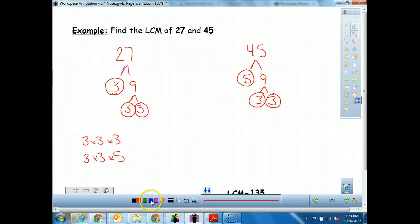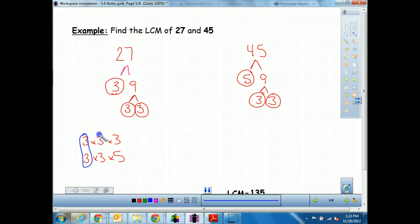So now I need to go through and circle their common ones. They both have a 3. So I got one circle. Oh, they both have another 3. And then these ones don't match. So I write out what did I circle the first time. I circled 3. My second circle is again of 3's. And then I have to go back and pick up these last little scraggly ones. We can't leave them behind. They're a little lonely sitting out there. So I'm going to add my 3 and my 5 in here. And when I do that, I need to multiply together.